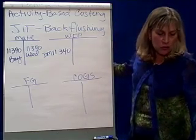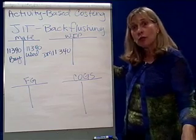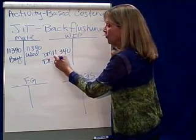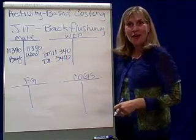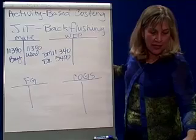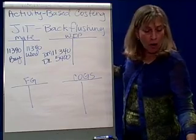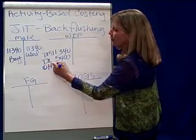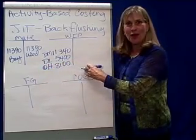Then on the 29th, direct labor costs of $5,400 were incurred. Direct labor shows up in work-in-process, because that's the labor that worked on the products. And on the 29th also, overhead costs incurred were $8,100. We know overhead also flows first into the work-in-process account. So here are our current manufacturing costs of making shovels.